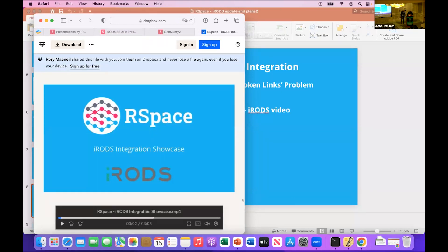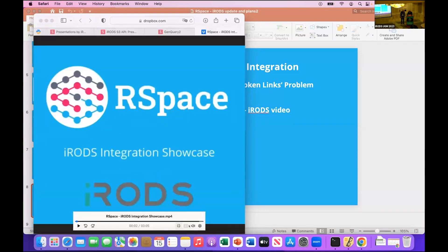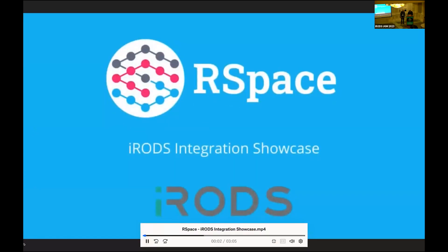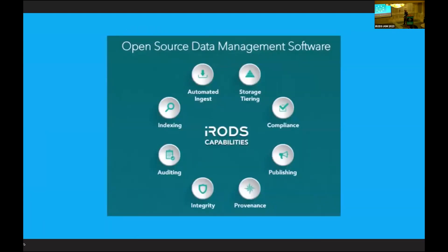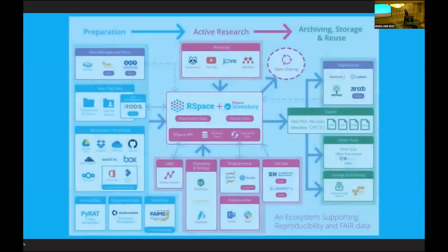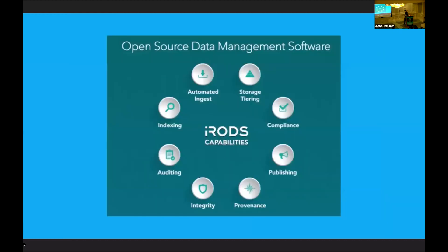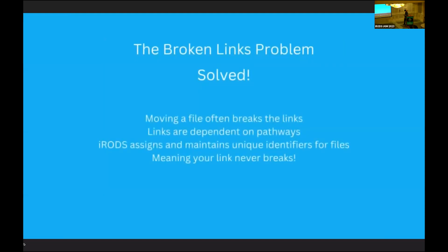Welcome to the iRODS integration showcase. iRODS is an open source data management software which virtualizes data storage and has a wide range of capabilities and applications. R-Space provides an institutional research notebook and sample management platform with a wide range of connectivity options, including links to data storage. However, when the pathways of files are disrupted, this can result in broken links. This initial integration with iRODS is focused on solving the broken links problem — maintaining the integrity of links even when pathways are disrupted — using unique identifiers provided by iRODS.